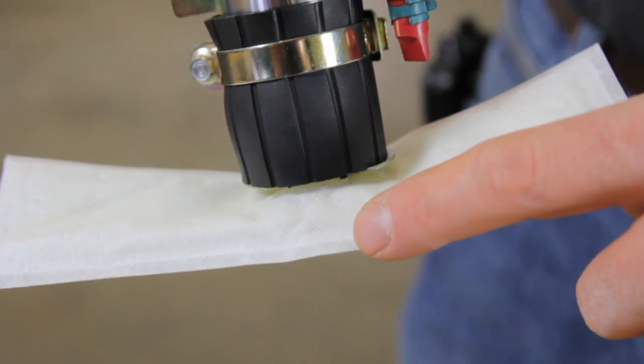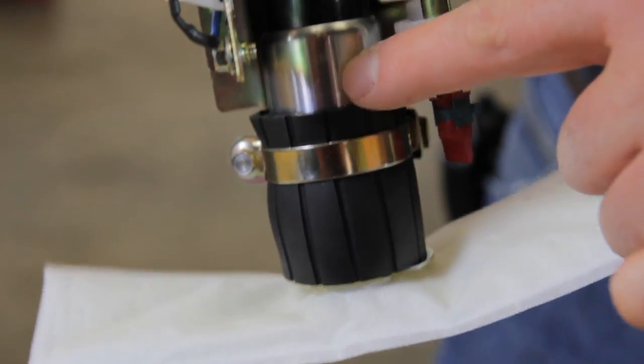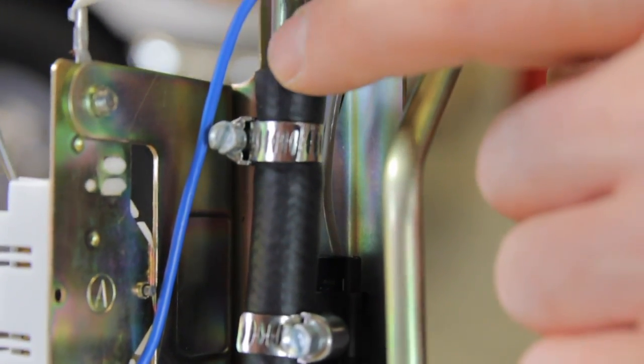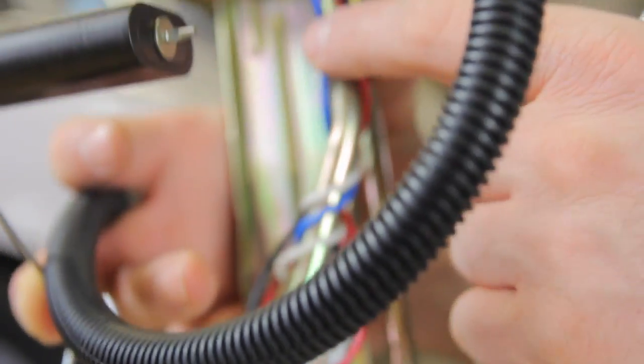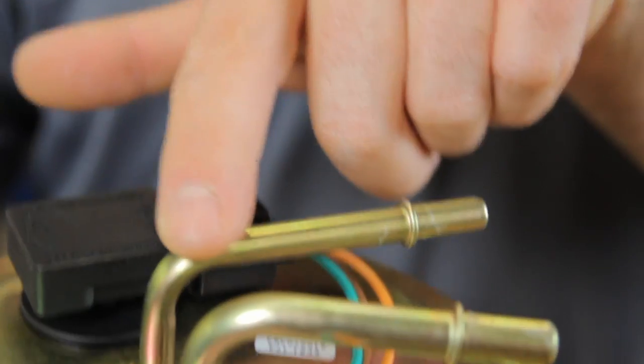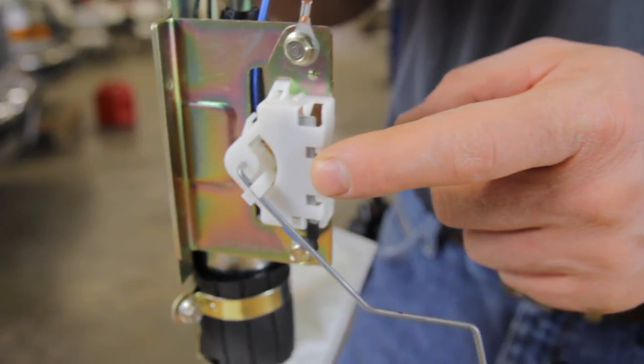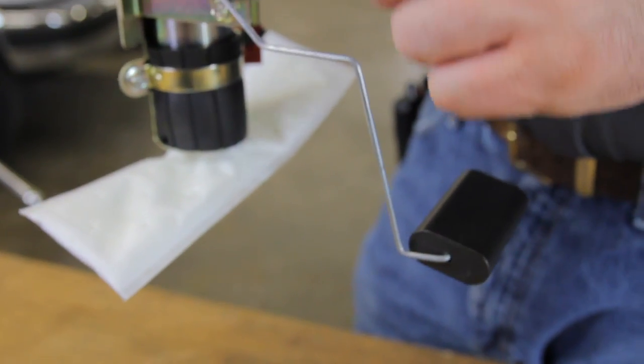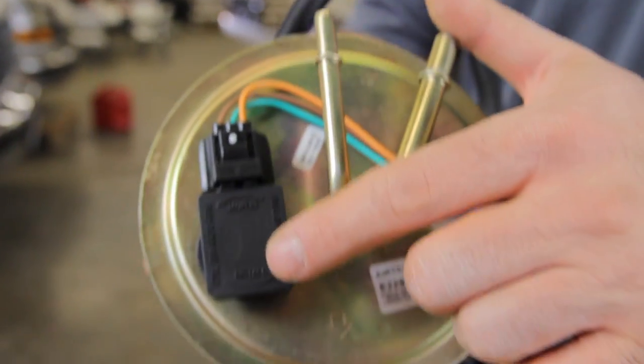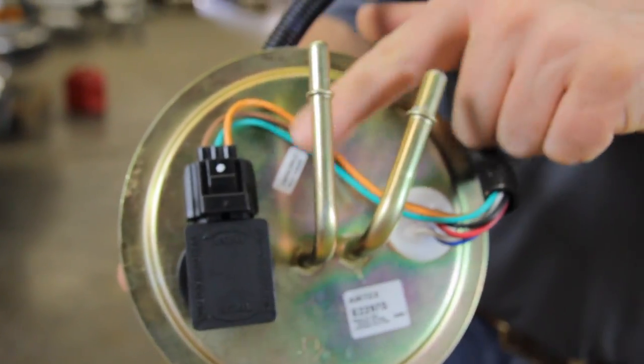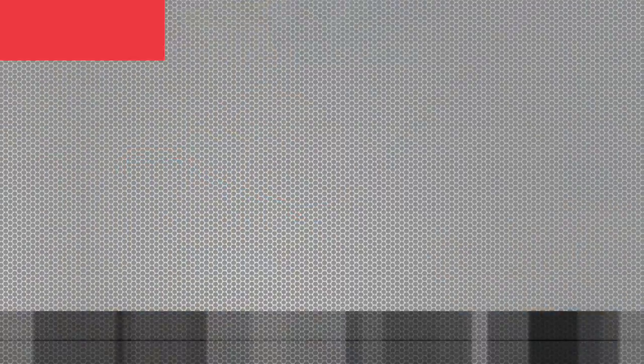On this sending unit assembly, we have a fuel strainer, the fuel pump, the pressure hose comes up and it's your outlet pressure going to the engine. Here's your return line coming back from the engine. We have a sending unit and float assembly. On top of this hanger assembly, we have a tank pressure sensor and a wiring connector.